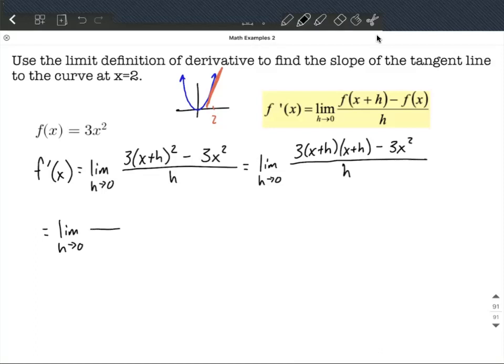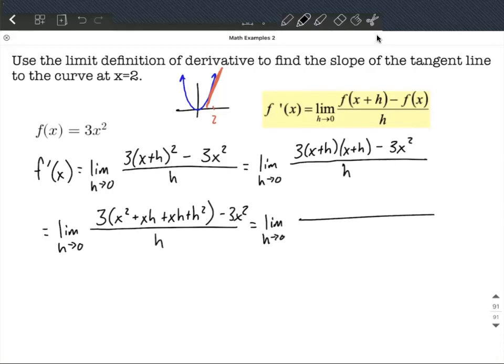Okay, next let's go ahead and multiply this out. So I'm bringing the 3 along. I'm going to go first, outer, inner, and last for those two binomials. So x² + xh + another xh + h² minus that 3x² comes along. Okay from here, keep bringing this limit as h approaches 0 along step to step to step. I'm going to go ahead and distribute the 3 to the inside of that set of parentheses and clear out the set of parentheses.